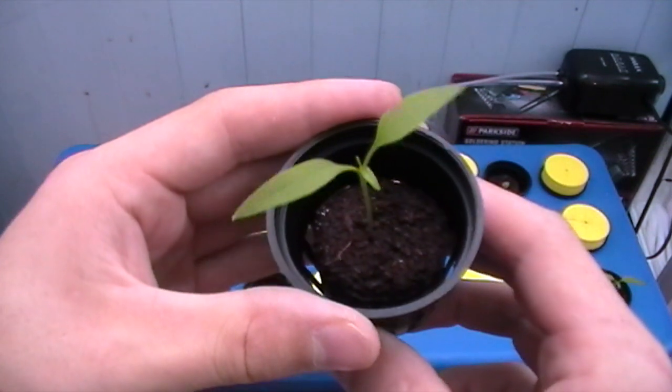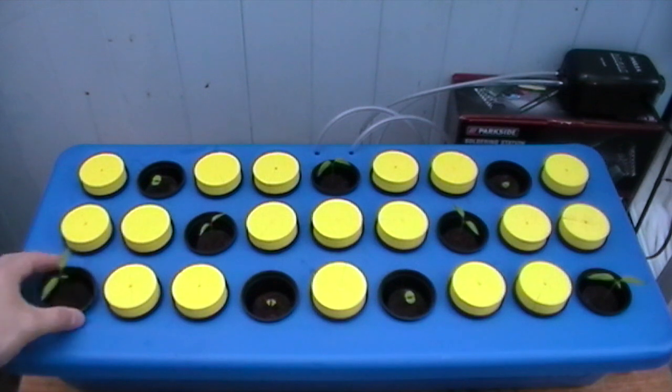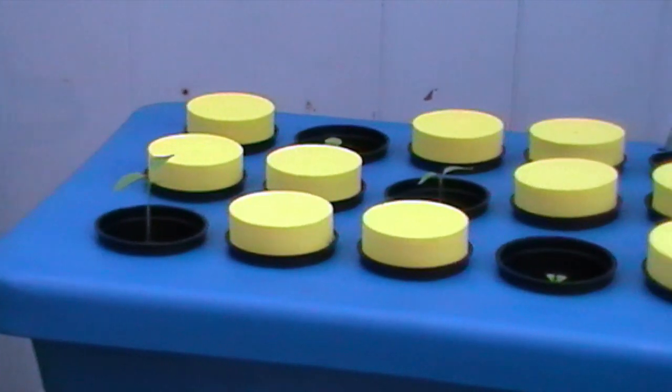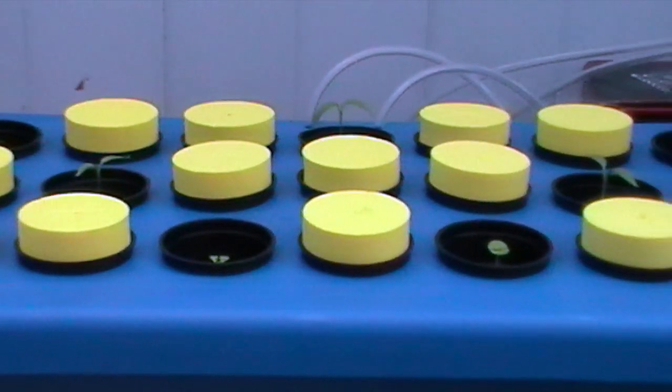The plants shown in this video are jalapeno peppers and basil seedlings. Both grown from seed, they are about a week old. So far they have only had pH adjusted tap water, but let's skip forward three weeks and see how they're getting on.